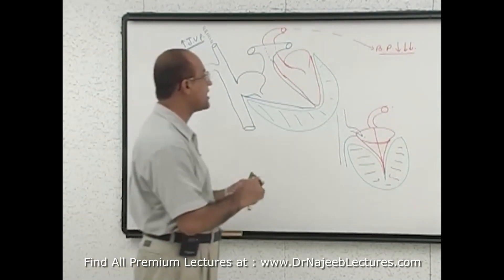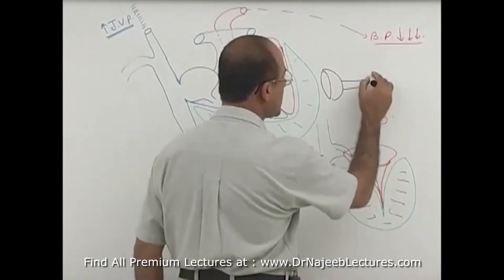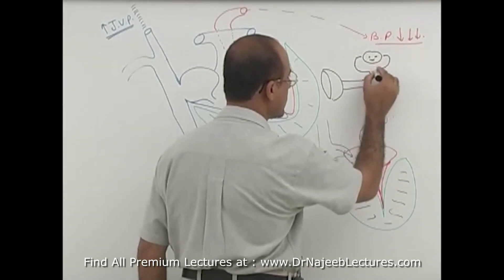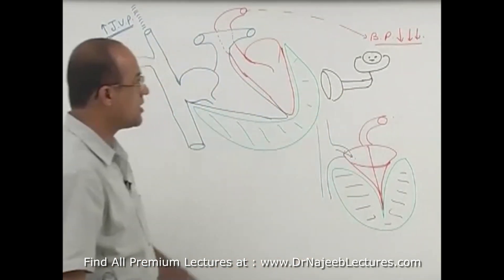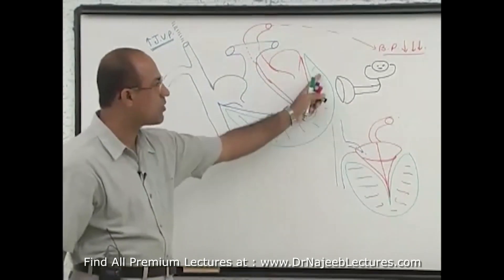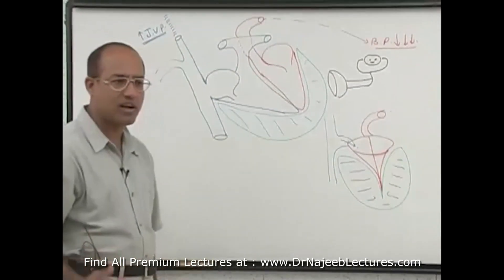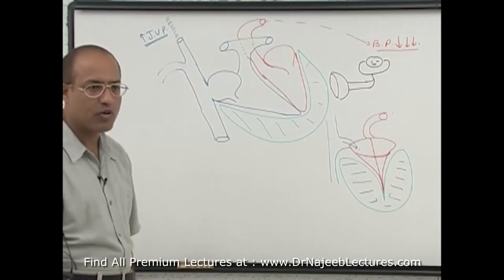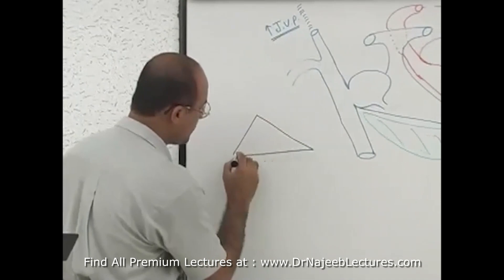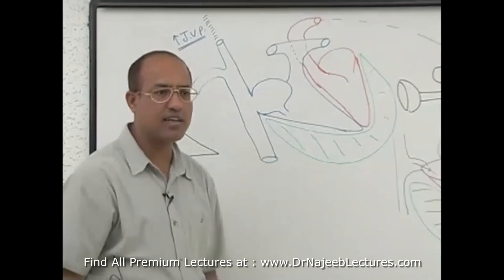And if you apply a stethoscope, you now have extra fluid between the heart and the chest wall. Do you think the heart sounds will be louder or muffled? They will be distant and muffled. So these three things will happen if someone develops rapid accumulation of fluid in the pericardial sac.